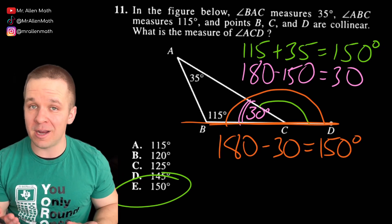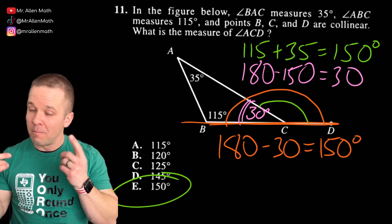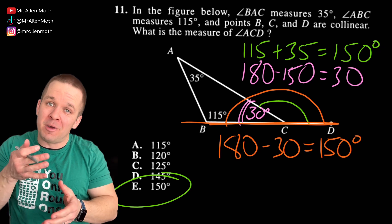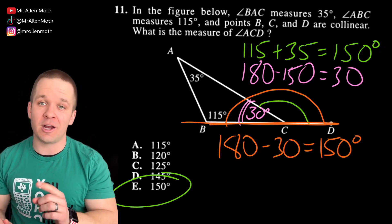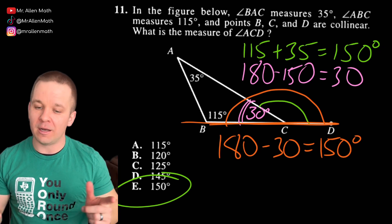Now what else do I know? Well, we got a straight line right here in BD. So that's going to all equal 180 degrees. So if I take 180 minus 30, that's going to give me 150 degrees. Same answer. I just took the longer road there. But hey, as long as you're getting it right, that's what matters.